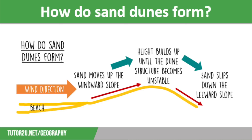However, the wind will blow more material to build up the windward side and the crest will collapse again, causing more sand to slip down the leeward side. This process keeps repeating and causes a sand dune to move inland. Over time the sand dune itself may become an obstacle, causing more dunes to form. The size of sand dunes is dependent on wind strength — the stronger the wind, the higher the sand dunes.